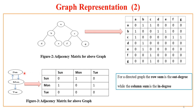A graph can also have string-labeled nodes, for example Sunday, Monday, Tuesday. This gives a 3×3 matrix. Being a directed graph, there is a connection from Sunday to Monday, so Sunday-to-Monday is marked 1, and Monday-to-Sunday is marked 1, but Sunday-to-Tuesday is 0. For a directed graph, the row sum is the out-degree and the column sum is the in-degree. Sunday has one out-degree and one in-degree, the in-degree coming from Monday-to-Sunday.